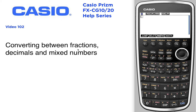Let's convert between fractions, mixed numbers, and decimals — backwards and forwards between all the different forms. Let's start with a mixed number. I'll start with my mixed number template. We'll do two and one-third, using the arrow keys to toggle between.